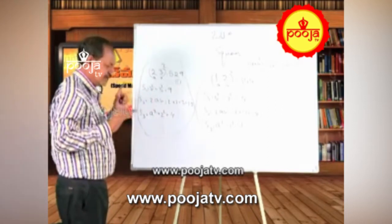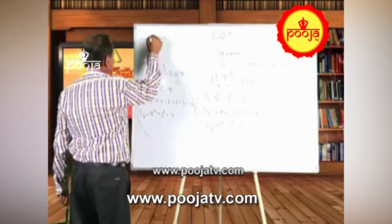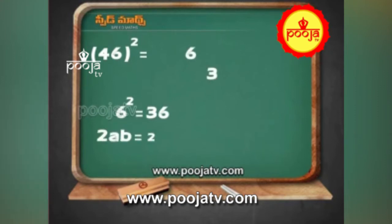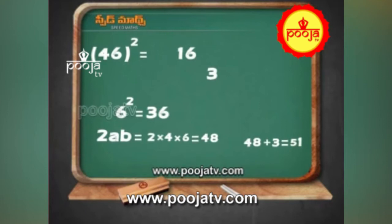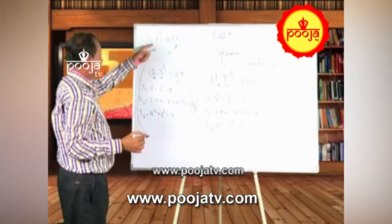Like that you can find the square of any 2-digit number. I will show you 3-digit and 4-digit examples as well. Take any number — suppose 46 square. 6 square equals 36 — write 6 here, 3 outside. 2AB equals 2 into 4 into 6 equals 48. 48 plus 3 equals 51 — write 1 here, 5 outside. 4 square equals 16. 16 plus 5 equals 21 — write 21 here. So 46 squared equals 2116.